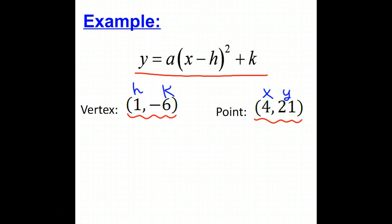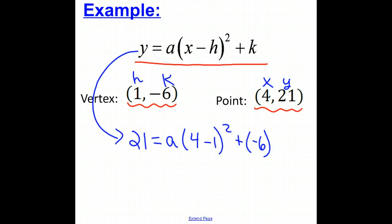So our equation becomes 21 equals a times 4 minus 1 squared plus negative 6. And now we're going to follow our order of operations and solve for the a value.